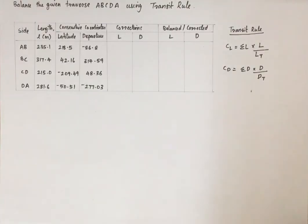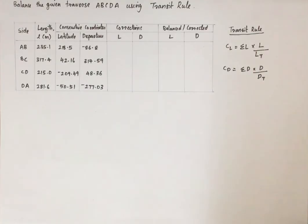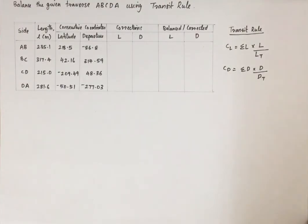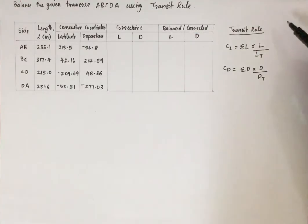In this question we are going to balance traverse A-B-C-D-A using the Transit Rule. There are two methods to solve or balance a traverse: the Bowditch Rule and the Transit Rule.